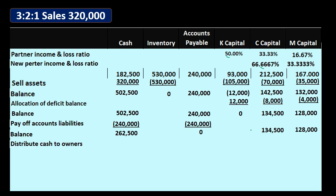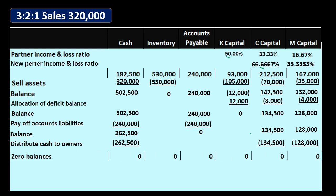Then we have the distribution to the owners. All we have remaining is cash and what is owed to the owners, and we can just distribute what is owed bringing the balances down to zero. Note that these final distributions and the capital accounts along the way will not necessarily match the profit sharing agreement. Remember, profit sharing only has to do with the allocation of net income — not withdrawals, not investments. Therefore, the balance in the capital accounts will not necessarily match the ratios given for the profit sharing.